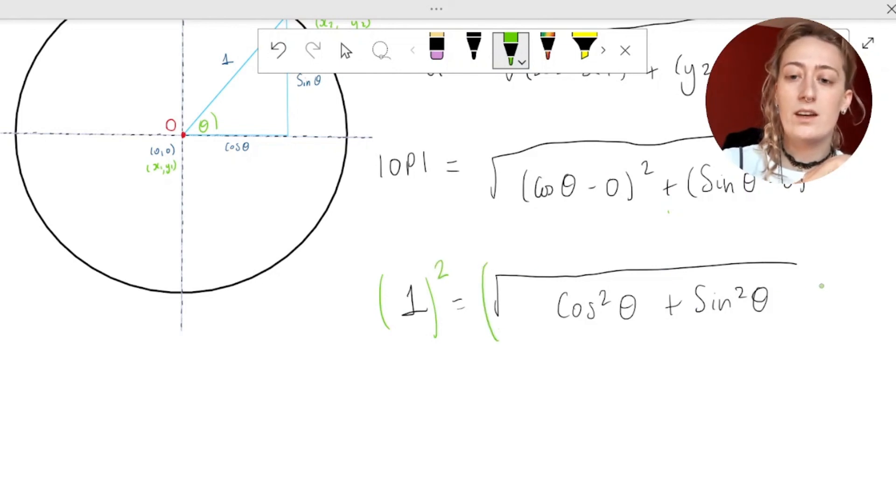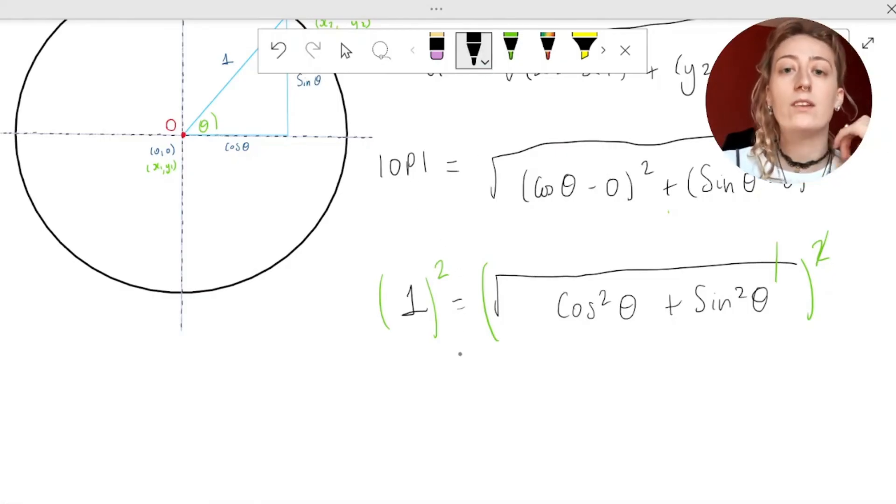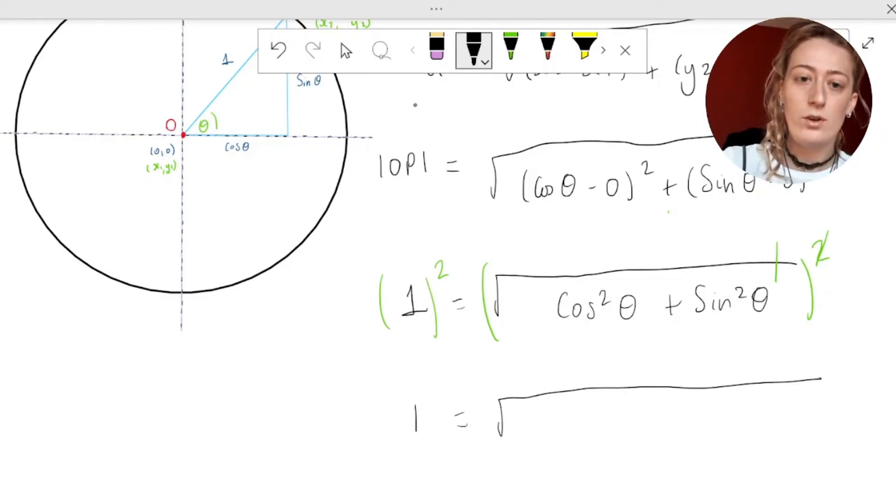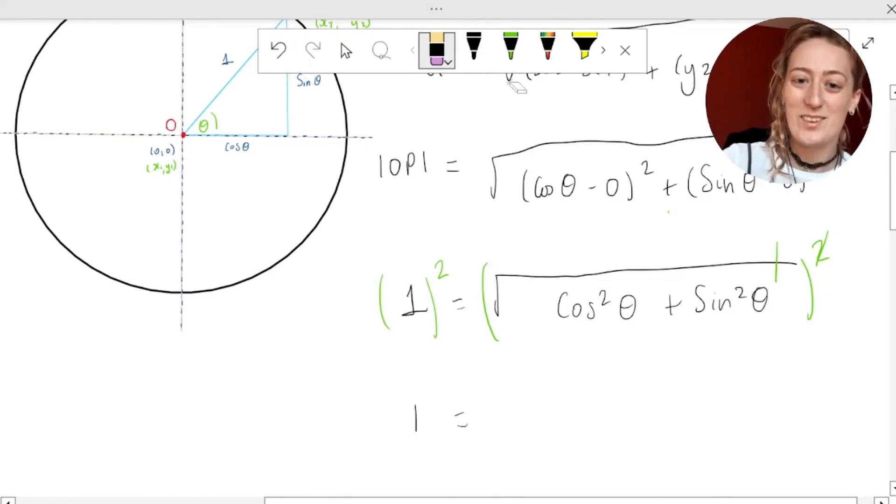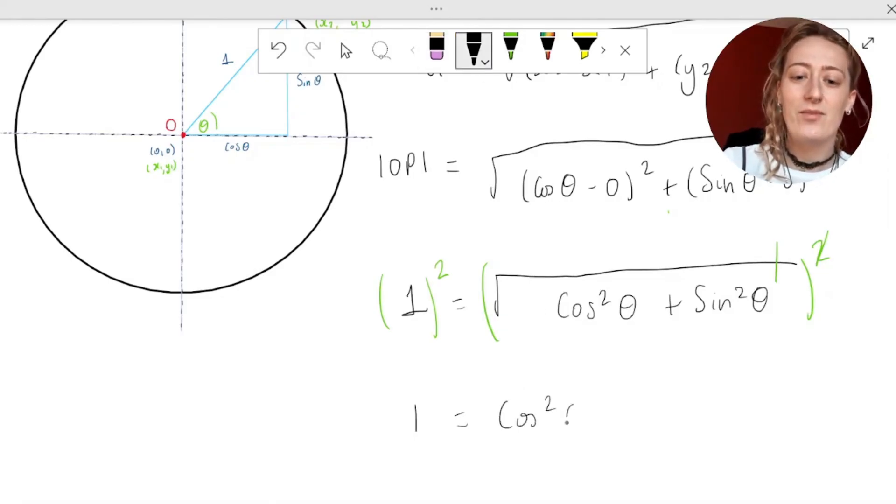So squaring the left-hand side, squaring the right-hand side, our square cancels with our square root. One squared is equal to one times one is equal to one. So one is equal to, our square roots have already cancelled, cos squared theta plus sine squared theta, and we're done.